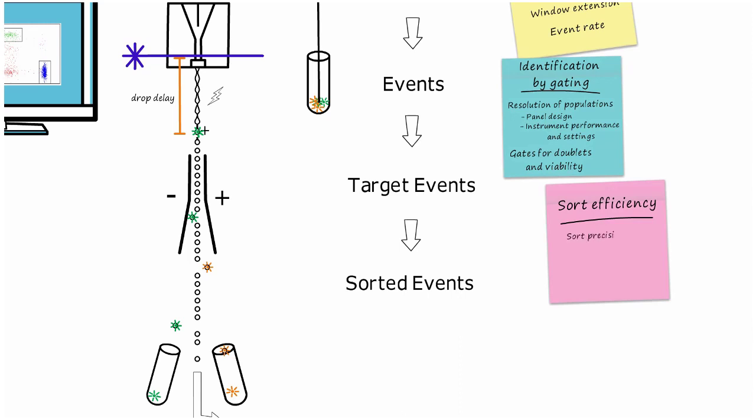In addition to the sort precision mode that is selected, the sort efficiency is also affected by the percentage of the target population in the original sample, the overall event rate, and the number of drops formed per second.